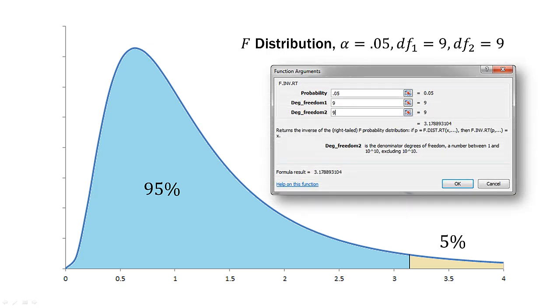So we go into Excel again, and we use the F.inv.rt, the F inverse right-tailed, and we put 0.05 for probability, nine for degrees of freedom one, and nine for degrees of freedom two. And that gives us an F critical of 3.18.